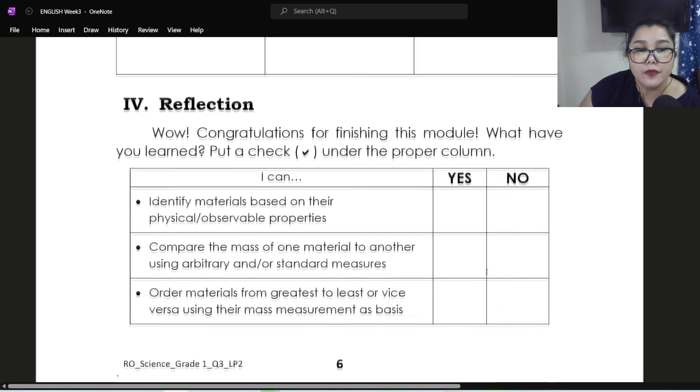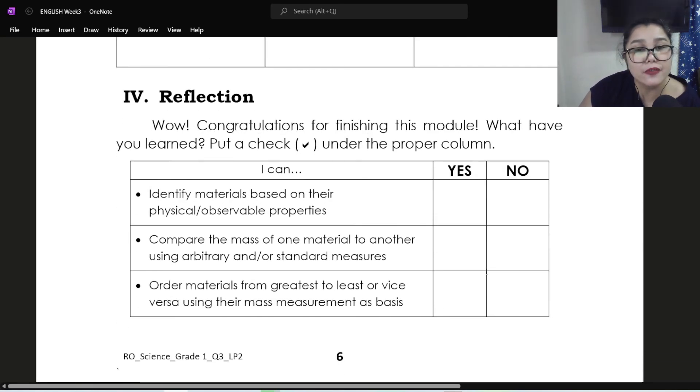And part four, reflection. Congratulations for finishing this module. What have you learned? Put a check under the proper column. So we have here: I can identify materials based on their physical and observable properties. Did you learn this part? Did you learn this from this module? Is it yes or no? Next, compare the mass of one material to another using arbitrary and or standard measures. When we mean standard measures, usually mentioned are grams, kilograms.